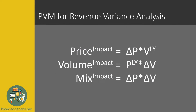Here we have the formula broken down. We see that price impact is calculated by multiplying the difference in price by the volume of last year, or the target volume. In this video the target is last year, but you could do the same for plan or forecast — just replace last year versus plan and the calculation will be the same.